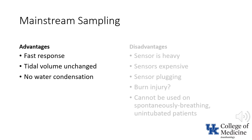In most capnometers, the sampling flow rate is about 150 mL per minute. While this is probably not relevant in adult patients, consider a neonate. If the respiratory rate is 30 breaths per minute, that translates to 5 mL per breath that is delivered by the ventilator and measured as inspired tidal volume, yet not delivered to the child. For a 3 kg neonate with a preset tidal volume of 7 mL per kg, that amounts to a loss of 25% of the tidal volume.